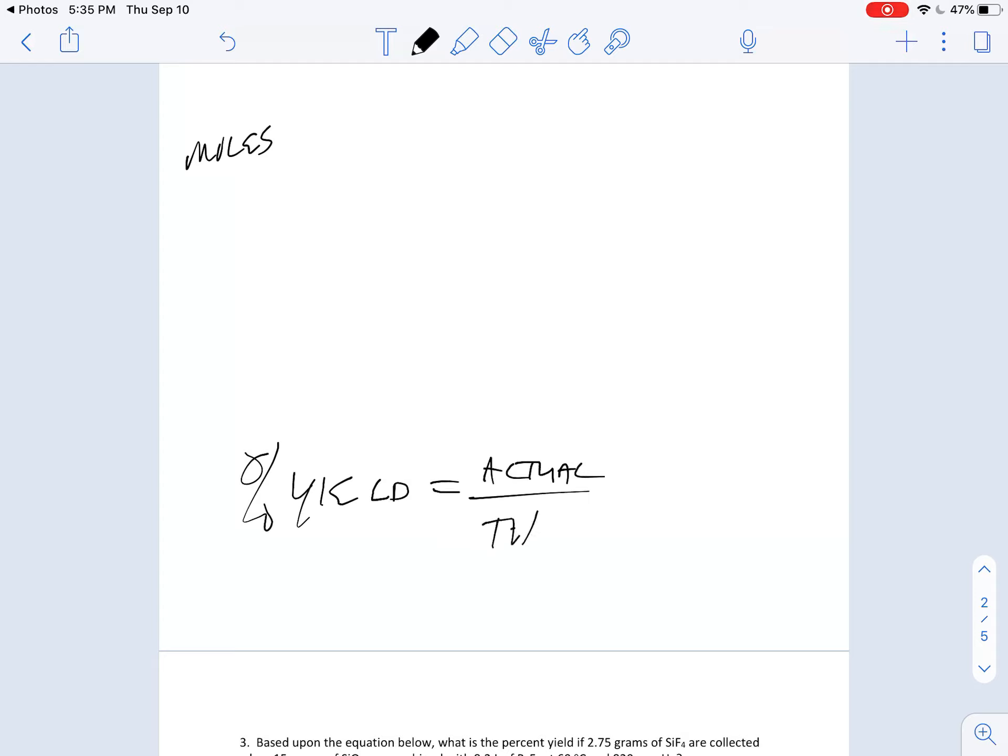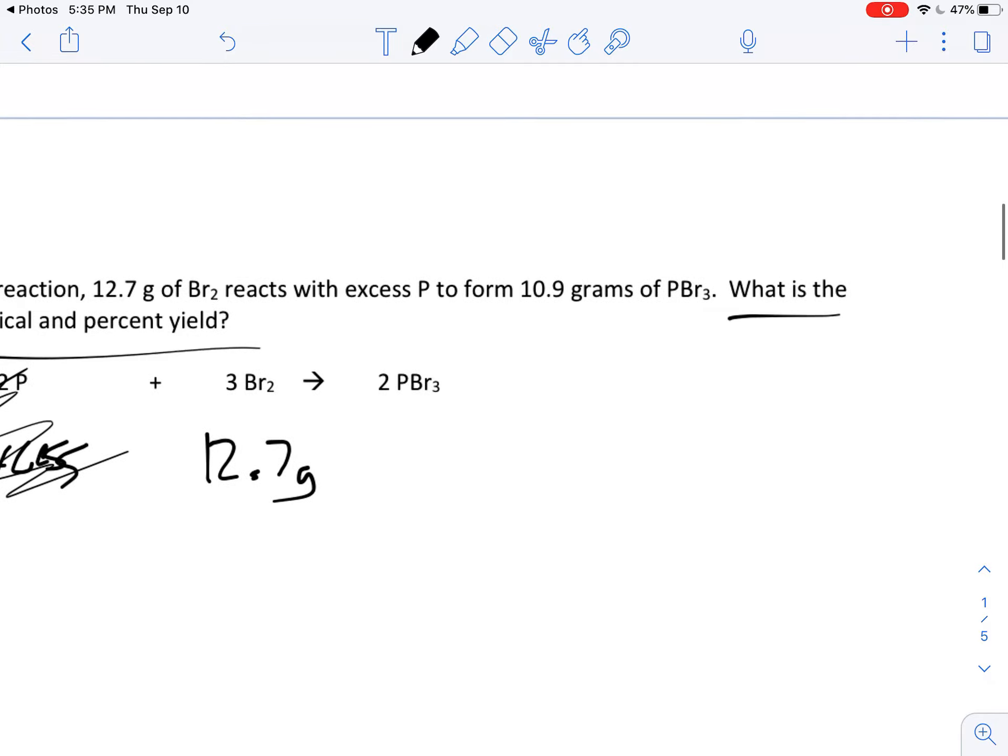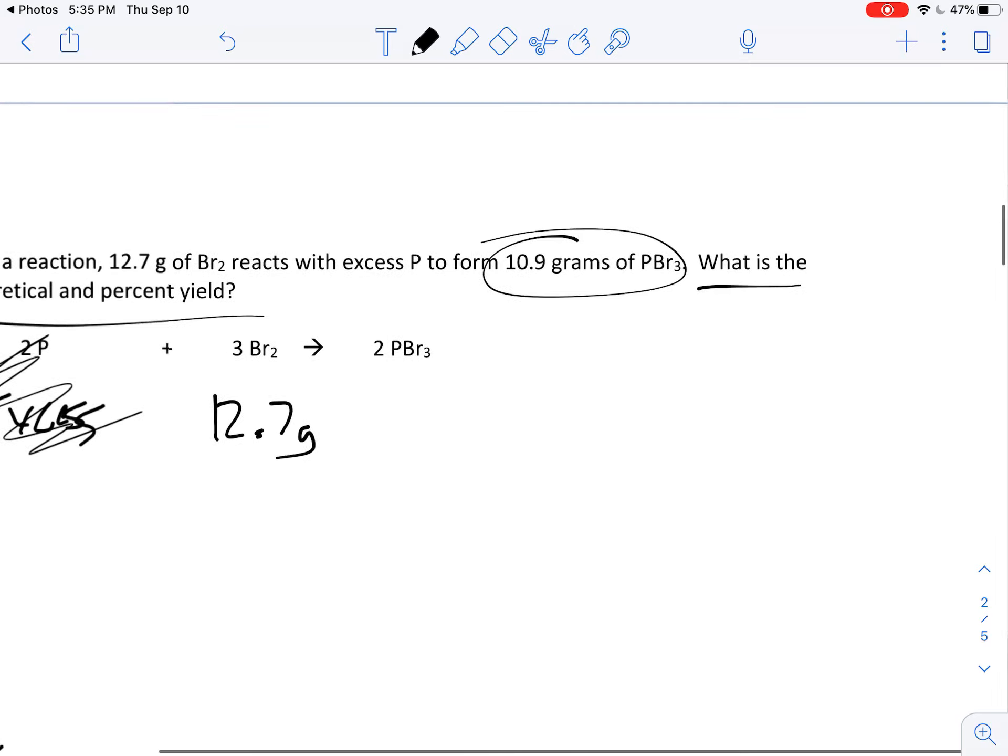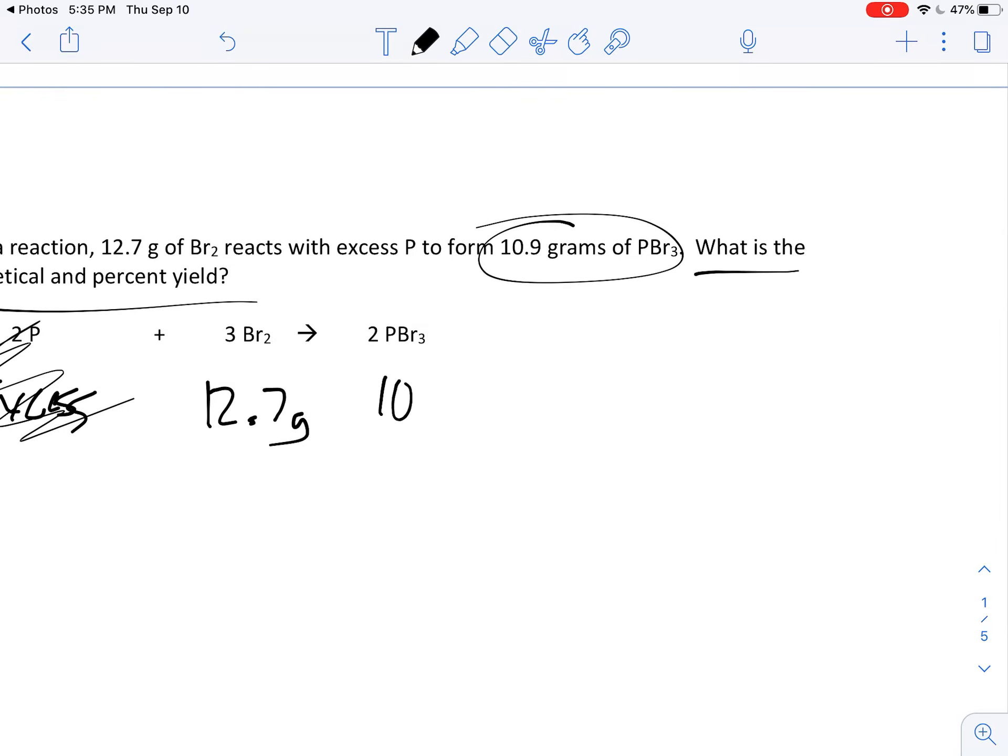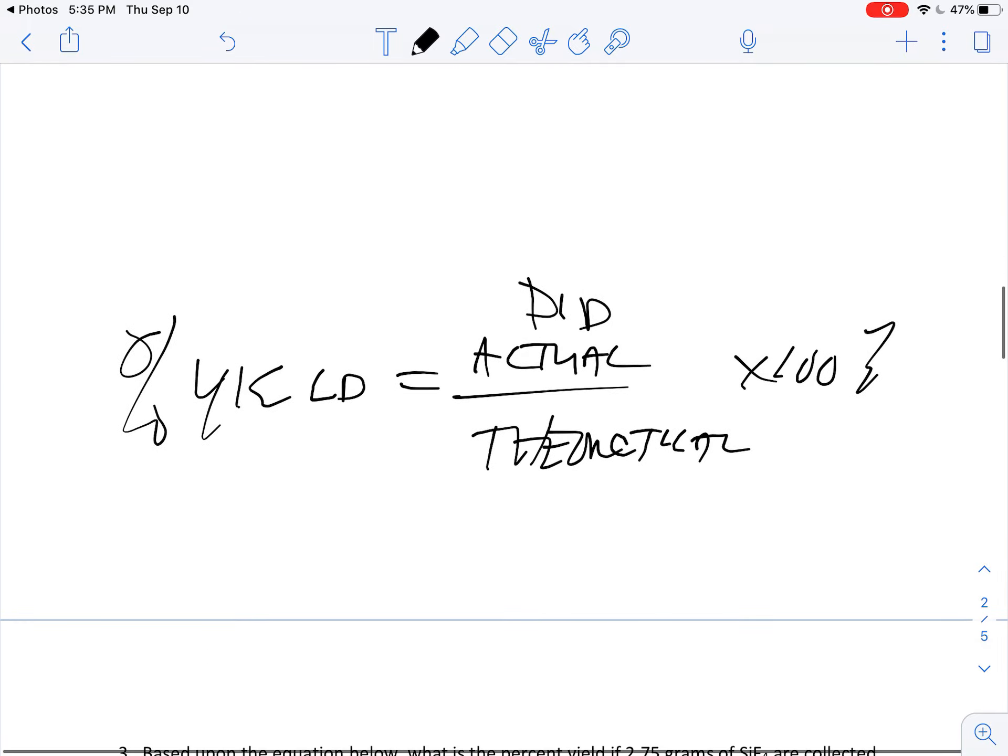That's what you did get - they're going to give you that number. It says I formed 10.9 grams of PBr3, so that's what you actually did get. We don't care about that number in our stoichiometry problem, we can put that number right down: 10.9 grams that I actually did get.